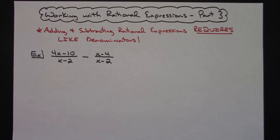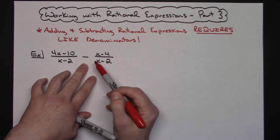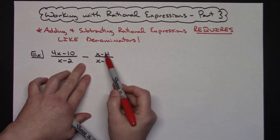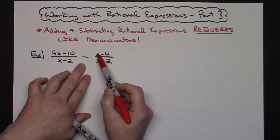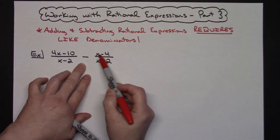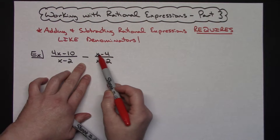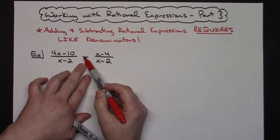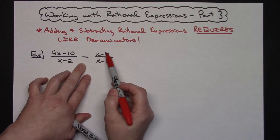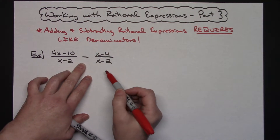In this first example I have done a subtraction mainly because I want to make sure and point out the fact that I am subtracting this entire fraction and there is a binomial on top. So when you subtract a binomial or any type of polynomial you've got to make sure and distribute that negative sign — go through and change all of the signs.